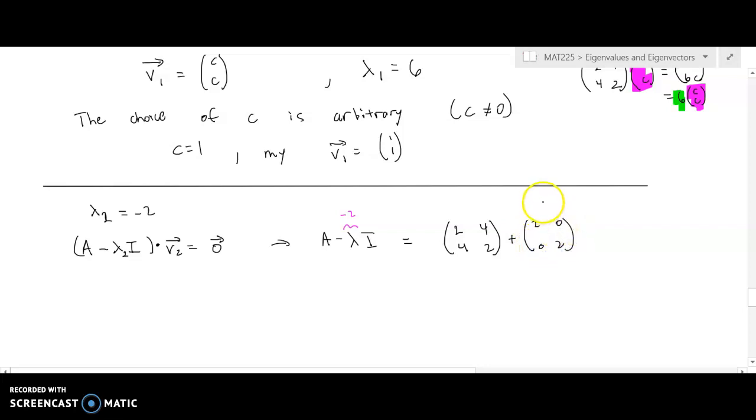So plus 2I will be [[2, 0], [0, 2]]. The identity matrix has the components [[1, 0], [0, 1]]. So if you double them, you get [[2, 0], [0, 2]]. And when we add those together, we get [[4, 4], [4, 4]]. Once again, notice that these columns are linearly dependent.